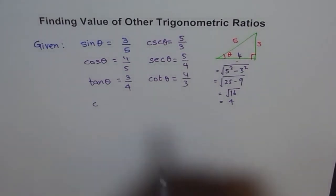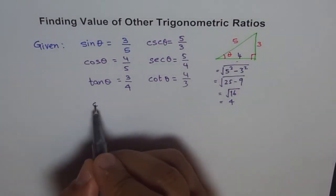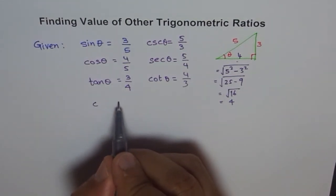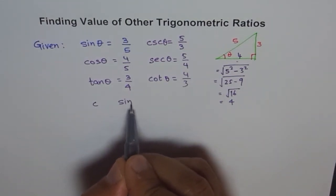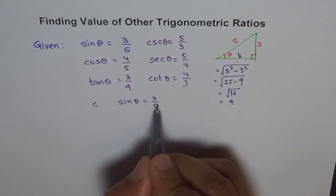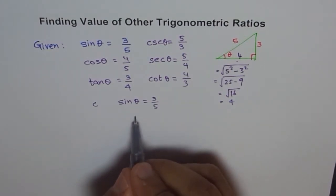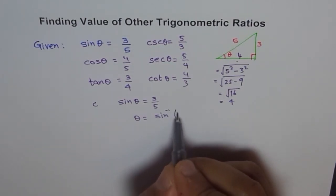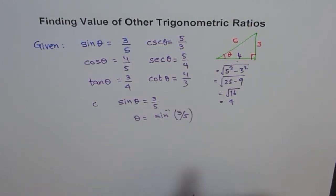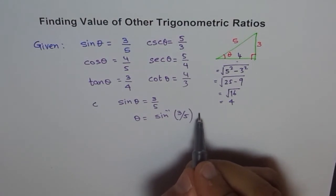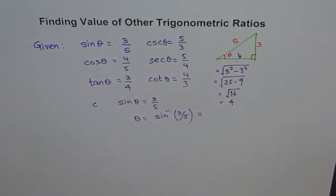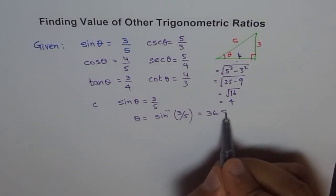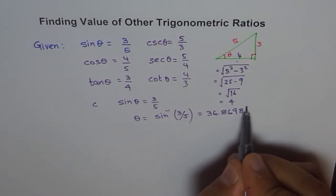It gives me 36.869. So what I am trying to say here is, when we say that sin theta is equal to 3 over 5, then what is theta equals to? We can find theta is sin inverse of 3 over 5. And using calculator, we can calculate this value. It comes to 36.8698 degrees.